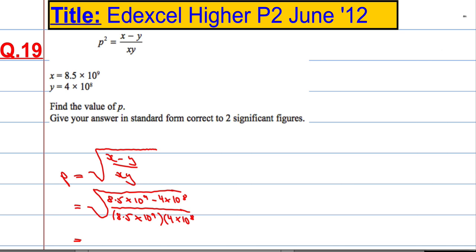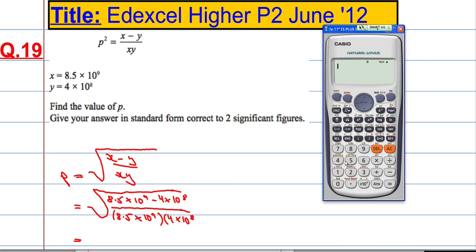We want to let the calculator do most of the hard work here. So I need to take a square root, and it's going to be a fraction, and I want to do 8.5 by 10 to the power of 9, subtract 4 by 10 to the power of 8, and divide that by 8.5 by 10 to the power of 9, times by 4 by 10 to the power of 8.